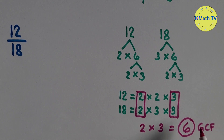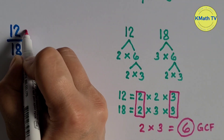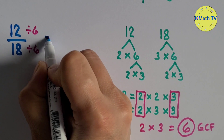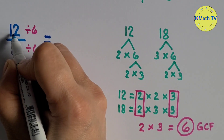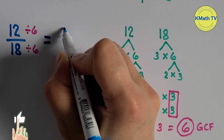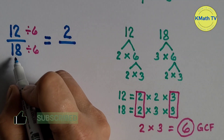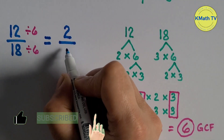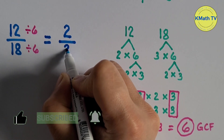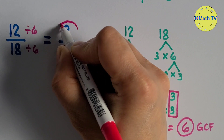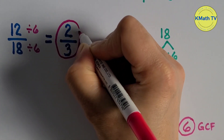Now let's use this GCF to reduce the fraction to lowest term. Let's divide the numerator and the denominator by their GCF, 6. 12 divided by 6 equals 2, and 18 divided by 6 equals 3. The lowest term of 12 eighteenths is 2 thirds.